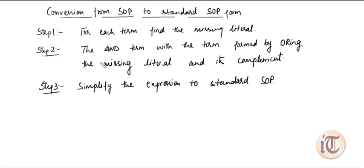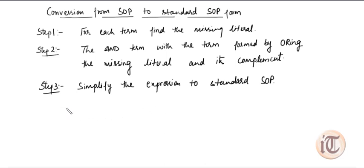There is a step-by-step procedure. Step one: for each term, find the missing literal. Step two: AND each term with the expression formed by ORing the missing literal and its complement. Step three: simplify the expression to get the standard SOP form.